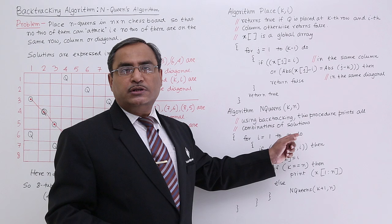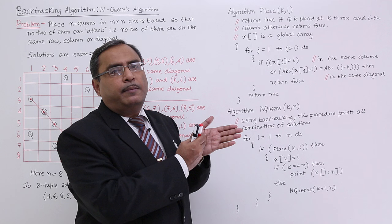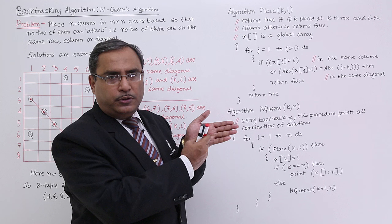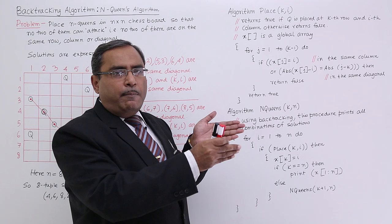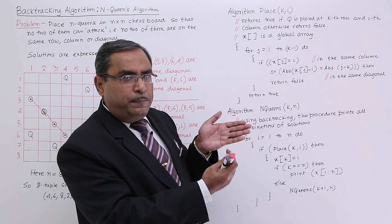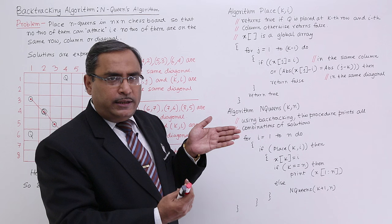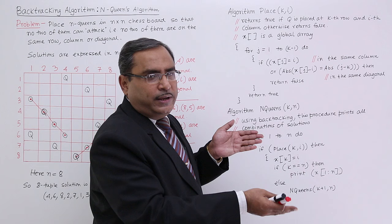For the first queen, I shall be placing that one at column number 1, then I shall go for the second queen. The second queen will be tried for the next possible column, then it will go to the third queen. In this way it will go to the eighth queen, then come back to the seventh queen. The seventh queen will be tried to be placed at the next column, and if it could be placed, then for the eighth queen again I shall start from column number 1 to n. So in this way, for all possible combinations, it will be working.